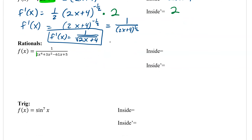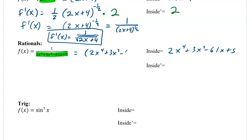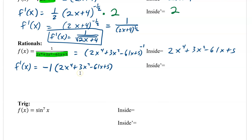The next one is rationals. My grouping is in the denominator — that is my inner function. I'll write it over here: 2x to the fourth plus 3x squared minus 61x plus 5. We rewrite it with a negative exponent. You could use product rule or quotient rule, but we're showing how to do it with chain rule, so I put the negative 1 up there. The derivative would be negative 1 times (2x⁴ + 3x² − 61x + 5) to the negative 2, times the derivative of the inside, which is 8x cubed plus 6x minus 61. We have to put parentheses on that derivative so we multiply it to the entire inside.